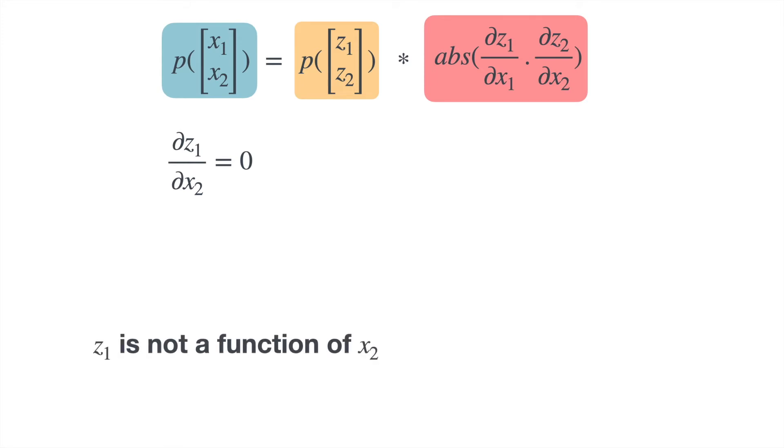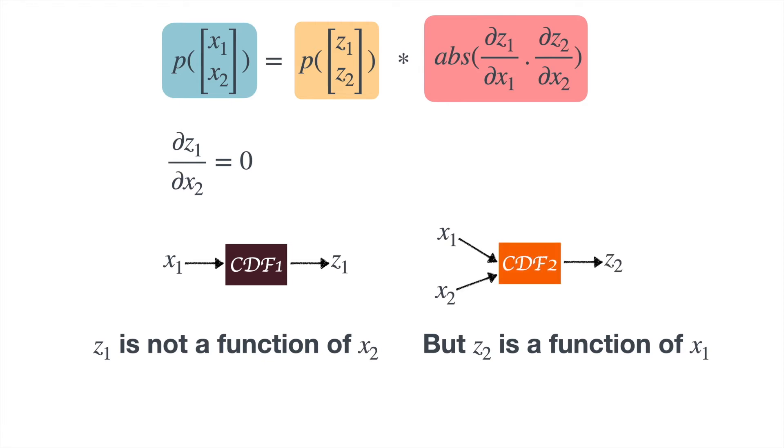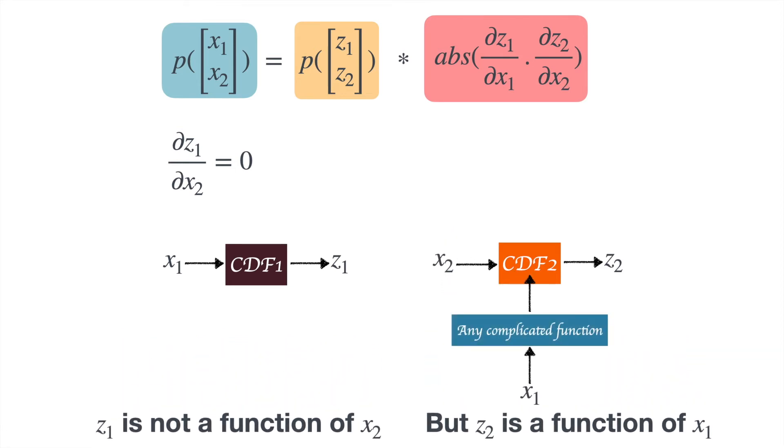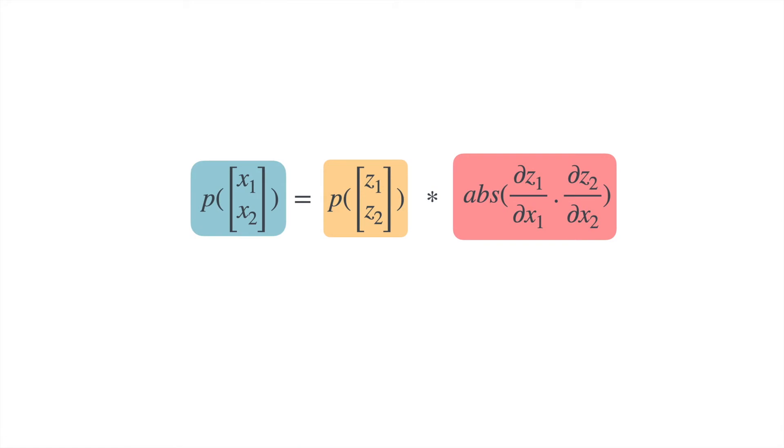What does it mean to say that dz1 by dx2 is equal to zero? It means that z1 is not a function of x2, but z2 is a function of x1 and x2. Which means we can define a CDF which takes x1 as input and spits out z1, and we will have another CDF which takes as input x1 and x2 and spits out z2. We can write the second equation, CDF2, as a function which takes x2 as input and spits out z2. There is one more function which takes x1 as input and spits out CDF2, and this function can be any complicated function, so it's typically a neural network.